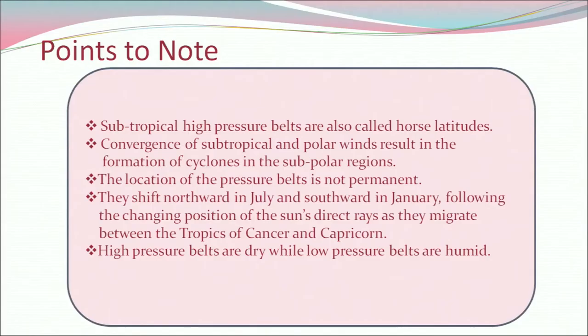Now let's have a look at the important points to remember. Subtropical high pressure belts are called horse latitudes. Convergence of subtropical and polar winds results in the formation of cyclones in the subpolar regions. The location of the pressure belt is not permanent — they shift northward in July and southward in January, following the changing position of the sun's direct rays as they migrate between the tropics of Cancer and Capricorn. High pressure belts are dry while low pressure belts are humid.